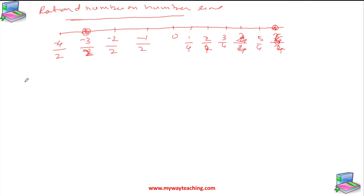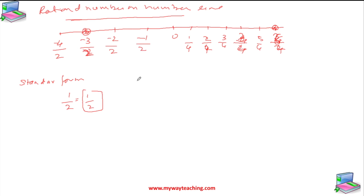Now there is another concept called the standard form. What is the standard form? If we say 1/2, the only common factor of the numerator and denominator is 1, so this is already in standard form. If we say 2/4, the common factors are 1 and 2. If we divide by 2/2, it becomes 1/2, so that is the standard form.